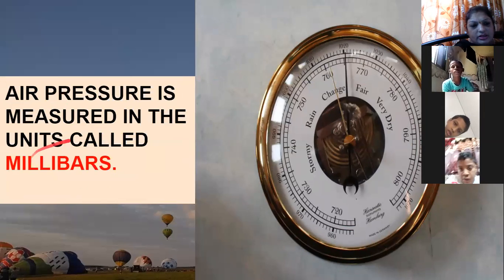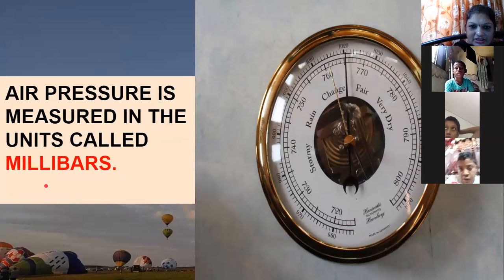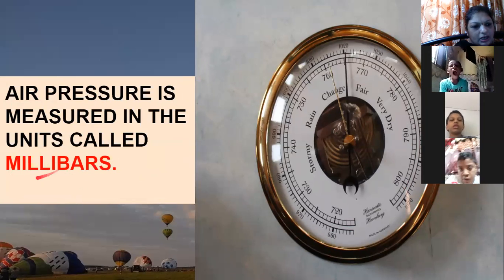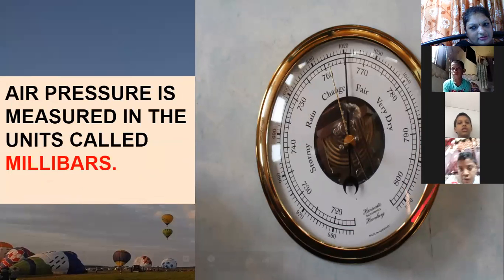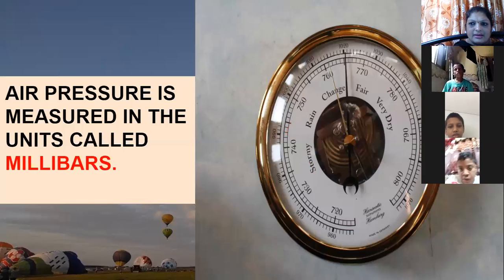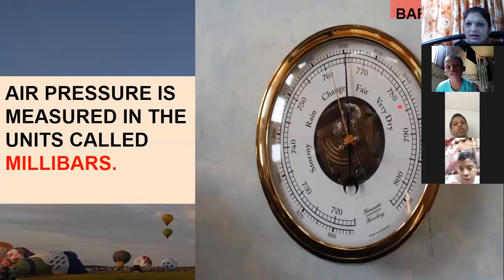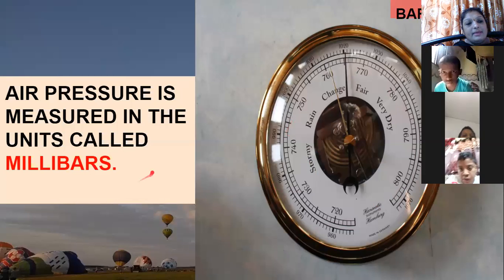What is the unit of air pressure? Just as we measure temperature in degrees Celsius, we measure air pressure in millibars. So the unit of air pressure is millibars. This instrument — the barometer — is used to measure air pressure, showing readings like 770 millibars and 780 millibars. A barometer is used to measure air pressure, and the unit is millibars.